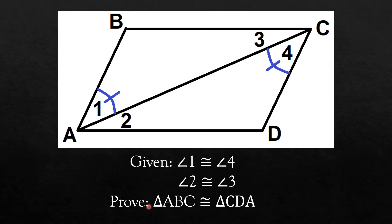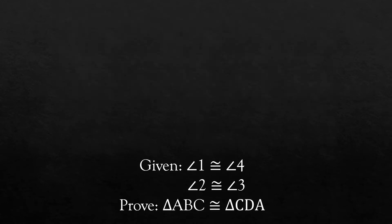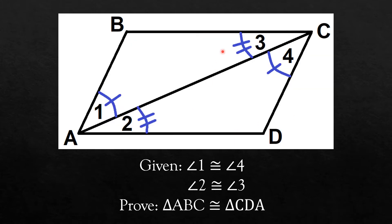In proving geometrical statements, it is very important that you do markings in the figure to guide you in the planning of your proof. Since angles 1 and 4 are congruent, these angles are marked as shown. Since you were given that angles 2 and 3 are congruent, then you do markings as shown. Take note that the number of marks created were not the same with the previous pair of angles because these two pairs of angles were not given to be congruent. After doing marks on the figure based on what we were given, let us proceed with the planning of our proof.